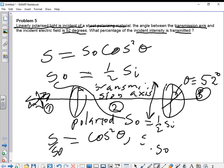Which is cos squared 52 degrees. If you solve for that, you find this is 0.379. If you multiply that by 100, you find this is 37.9%.